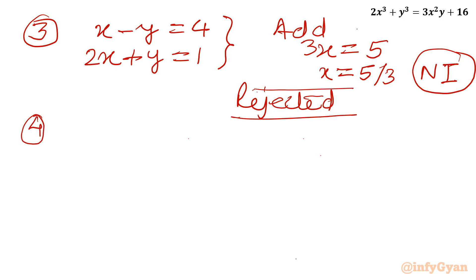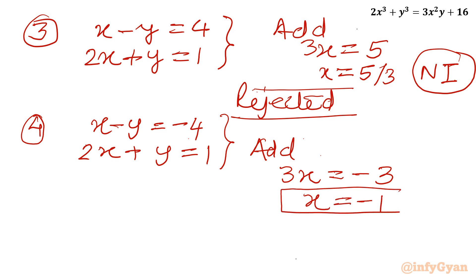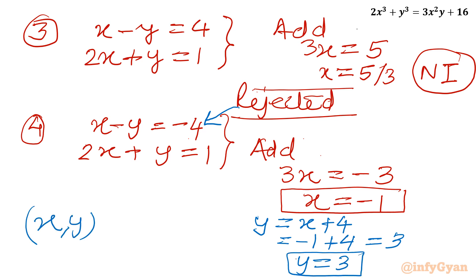Fourth system: x − y = −4 and 2x + y = 1. Adding both equations gives 3x = −3, so x = −1. Plugging into the first equation: y = x + 4 = −1 + 4 = 3. So the second ordered pair for our integer solutions is (−1, 3).